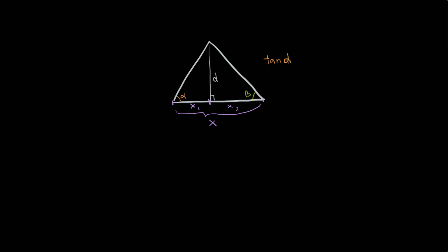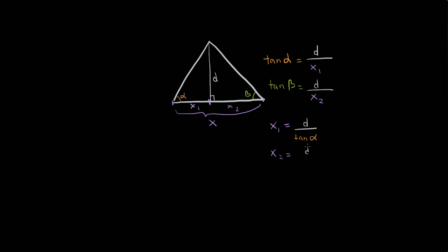Let's list out some equations. Tangent of alpha — remembering that tangent is TOA, opposite over adjacent — is equal to d over x1. We also know that tangent of beta is equal to d over x2. Rearranging by multiplying by x1 and dividing by tan(alpha), we get x1 = d / tan(alpha), and x2 = d / tan(beta).